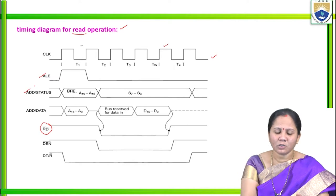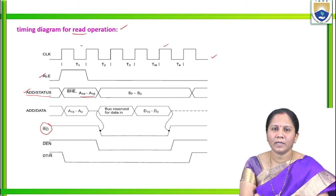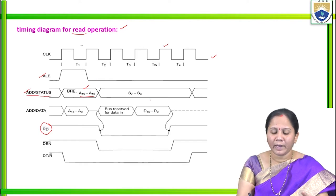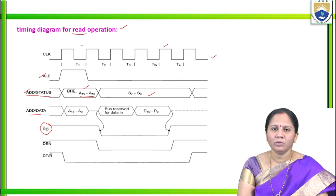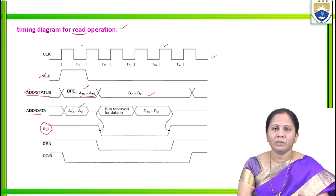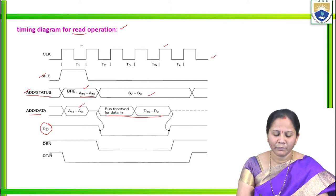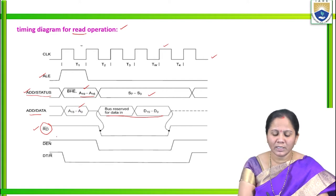The address and status lines A16–A19 are multiplexed: during T1, address information is present because ALE is enabled only at T1; in remaining T states, status information is available. For the address/data multiplexed lines AD0–AD15, address A0–A15 is present at T1, and data is present in the remaining T states. The RD̄ signal is active low, so it is represented with a negative pulse during T2, T3, TW, and T4, where data is available.